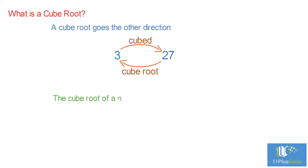What is a cube root? A cube root goes the other direction. 3 cubed is 27, so the cube root of 27 is 3. The cube root of a number is a special value that when cubed gives the original number. The cube root of 27 is 3 because when 3 is cubed you get 27.